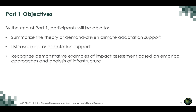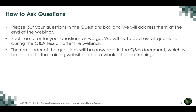The objectives for the first part of the webinar series are as follows. By the end of part one, participants will be able to summarize the theory of demand-driven climate adaptation support, list resources for adaptation support, and recognize demonstrative examples of impact assessment based on empirical approaches and analysis of infrastructure. Please put your questions in the questions box, and we will address them at the end. The remainder of the questions will be answered in a Q&A document posted to the training website about one week after the training.